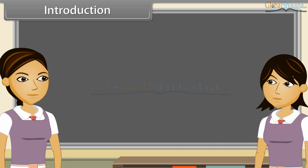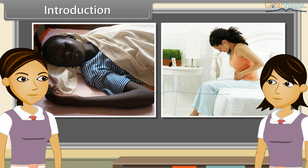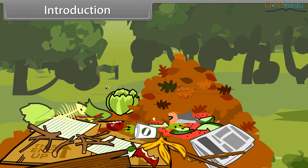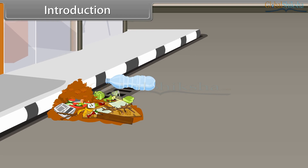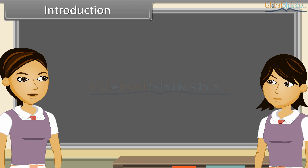Ankita, do you know that even in normal environmental conditions, when our surroundings are not regularly cleaned, then also so many diseases are spread — for example, malaria, diarrhea, etc. I have noticed so many times when the sweeper does not come in my colony, there is a huge dump of garbage and water is logged, which gives birth to so many bacteria, fungi, flies and mosquitoes, which in turn give rise to various dangerous diseases.